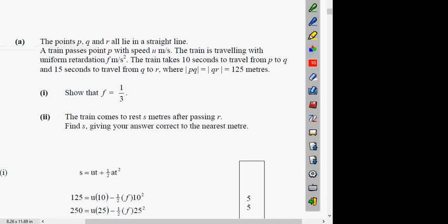So what we have here is the points P, Q, and R, all in a straight line. The train passes point P, then Q and R. Now we know it's an interval question.